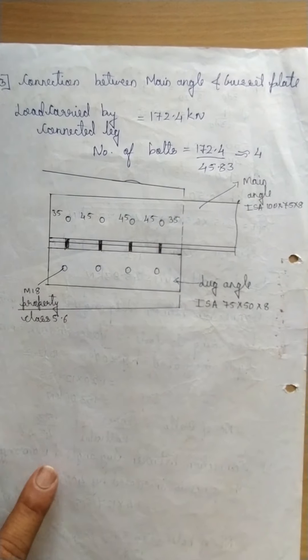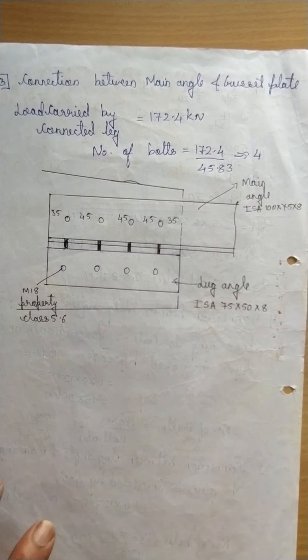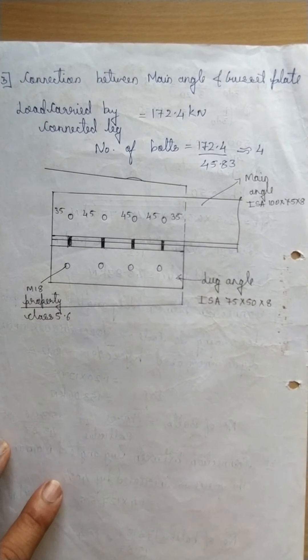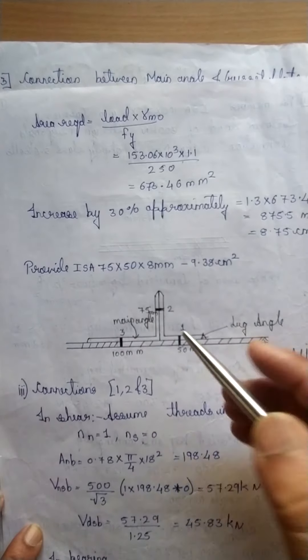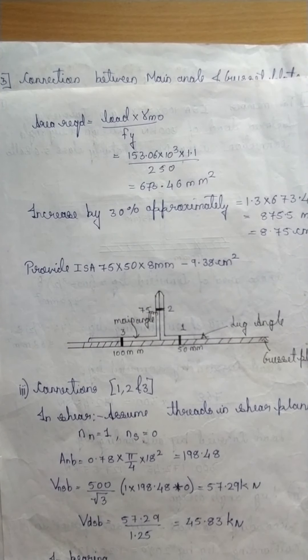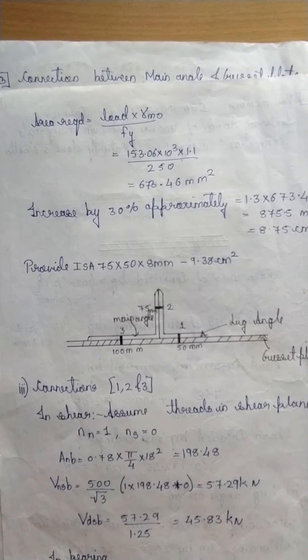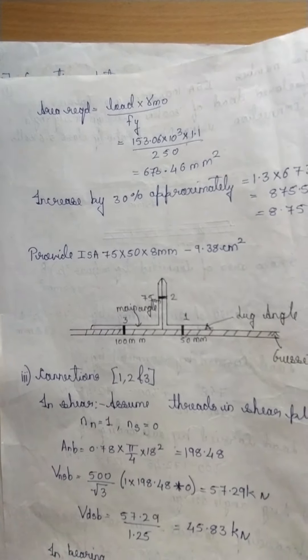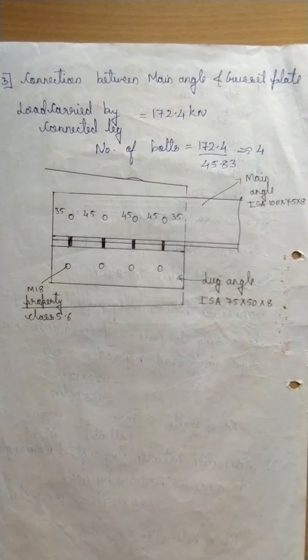In this numerical, all three connections — 1, 2, and 3 — required 4 number of bolts each. However, it is not necessary that you will always get the same number; it depends on the forces and bolt value. This is how the design of lug angle should be done. You can now solve similar numericals. Thank you.